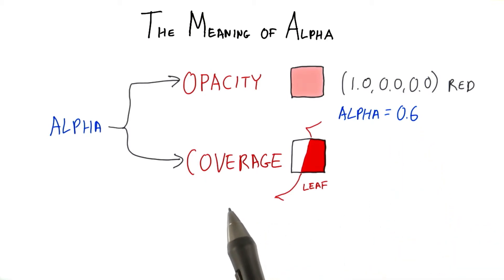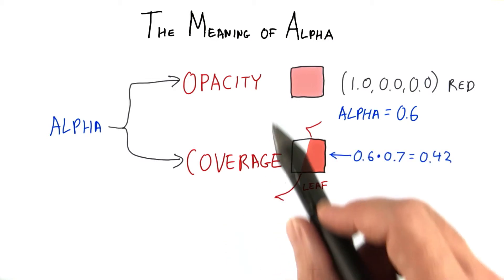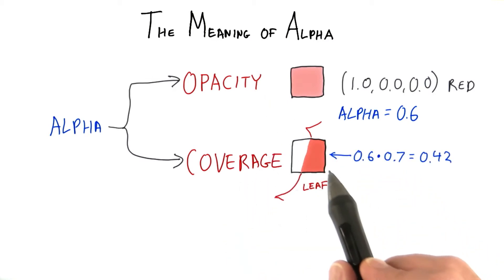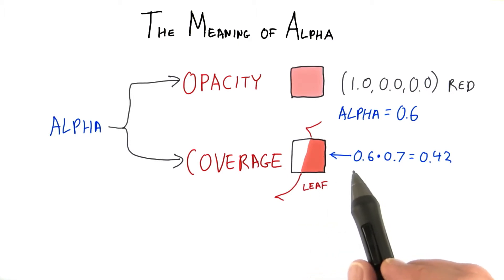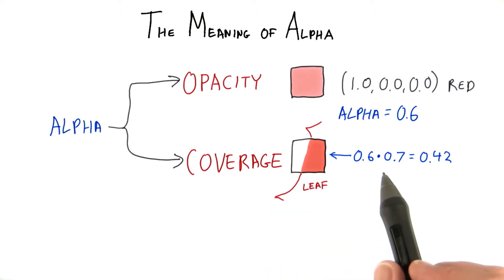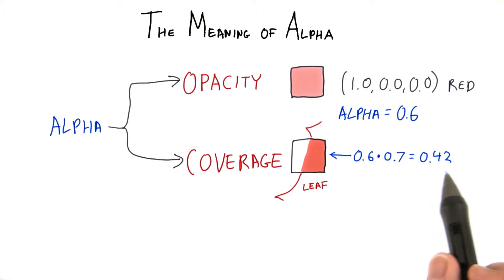What's interesting here is that a single alpha value is used for both opacity and coverage. It can even mean both at the same time. You could have a cutout figure whose texel has a 0.6 coverage and a 0.7 opacity to give a 0.42 alpha. Whatever the interpretation, we use the same overblending equation when putting one object atop another.